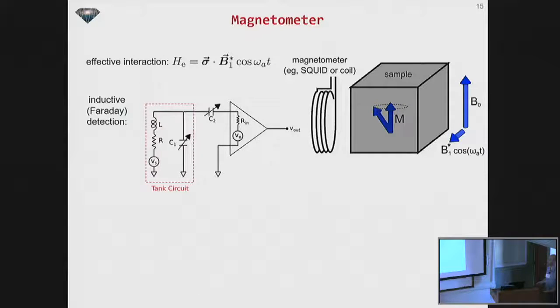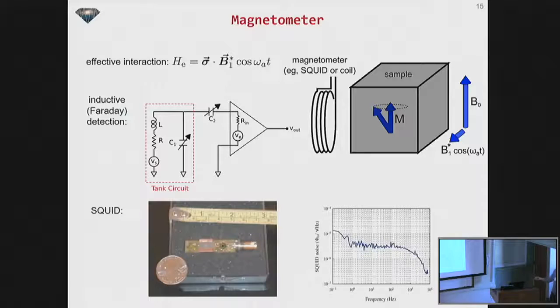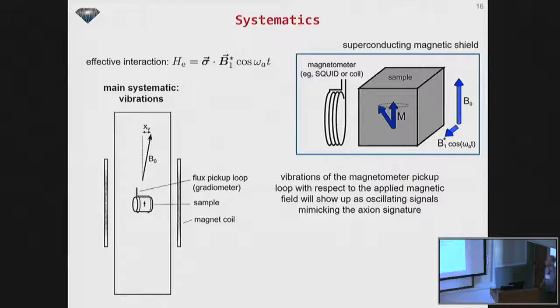All right, the magnetometer, this thing over here, can be a couple of things. The simplest thing to do is just to do a coil, hook it up to an amplifier and just do inductive Faraday detection, maybe with a tank circuit. The next simplest thing is just as Andy described, is to use a squid because we're sitting, we're going to be sitting at four Kelvin liquid helium anyway, so we might as well put a squid in there. Here's a picture of a squid, and here's some noise spectrum that we've taken.